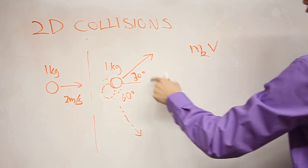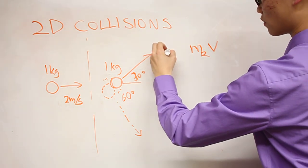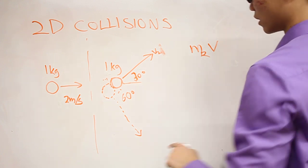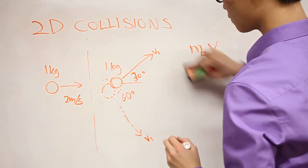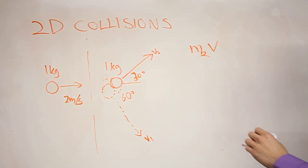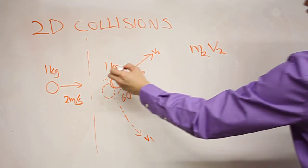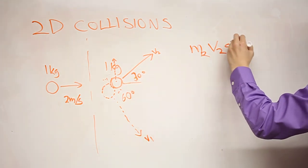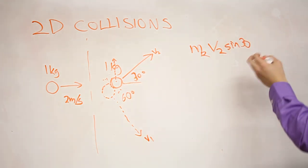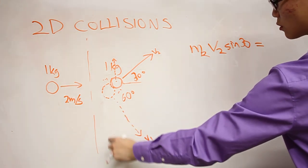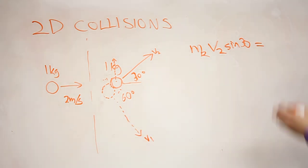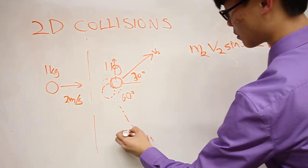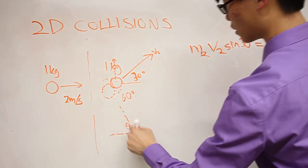M2, which is this, times its V2, if this is V2 final, let's just call it V2, and this is V1, which we don't know, then that component upwards, according to this angle, is going to be sine 30, is going to equal the downwards component of this momentum. So that's M1, V1, cosine 30, and we're going to use the same angle here as that.